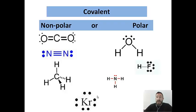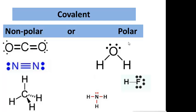We can also talk about polar particles. Polar particles have a partial negative and a partial positive side. For example, on water there's a partial negative side next to the oxygen, and next to each hydrogen there's a partial positive side. The more electronegative element pulls that shared pair of electrons, so it has a greater share of those electrons and is partially negative. Oxygen is more electronegative, so it's partially negative.